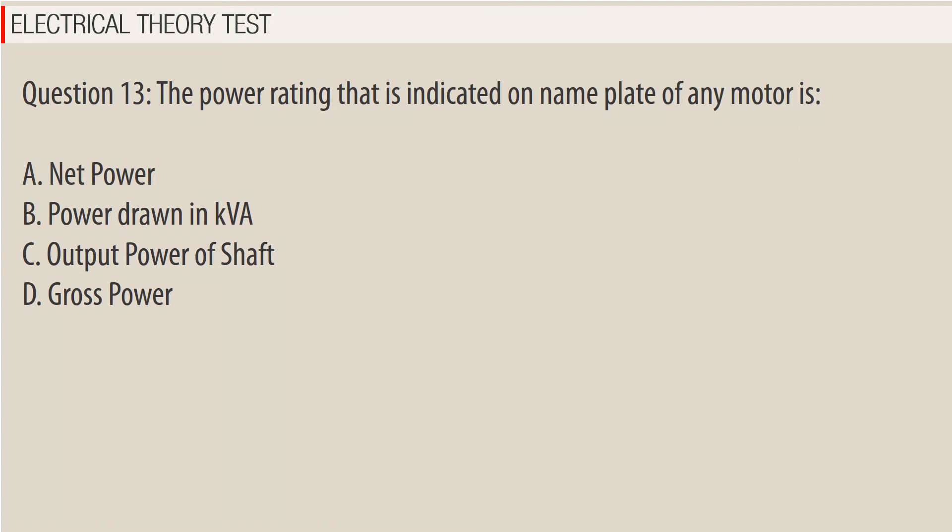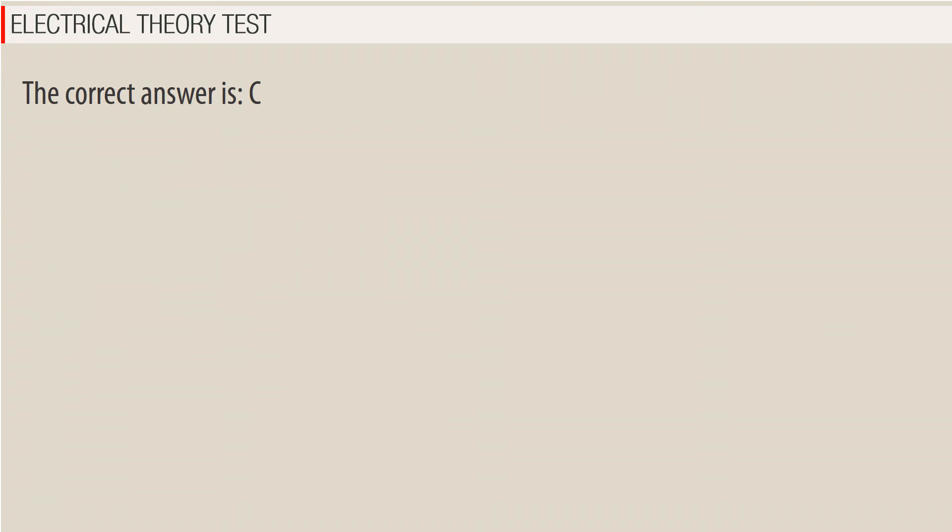Question 13: The power rating that is indicated on the nameplate of any motor is — A. Net power, B. Power drawn in kVA, C. Output power of shaft, D. Gross power. The correct answer is C.